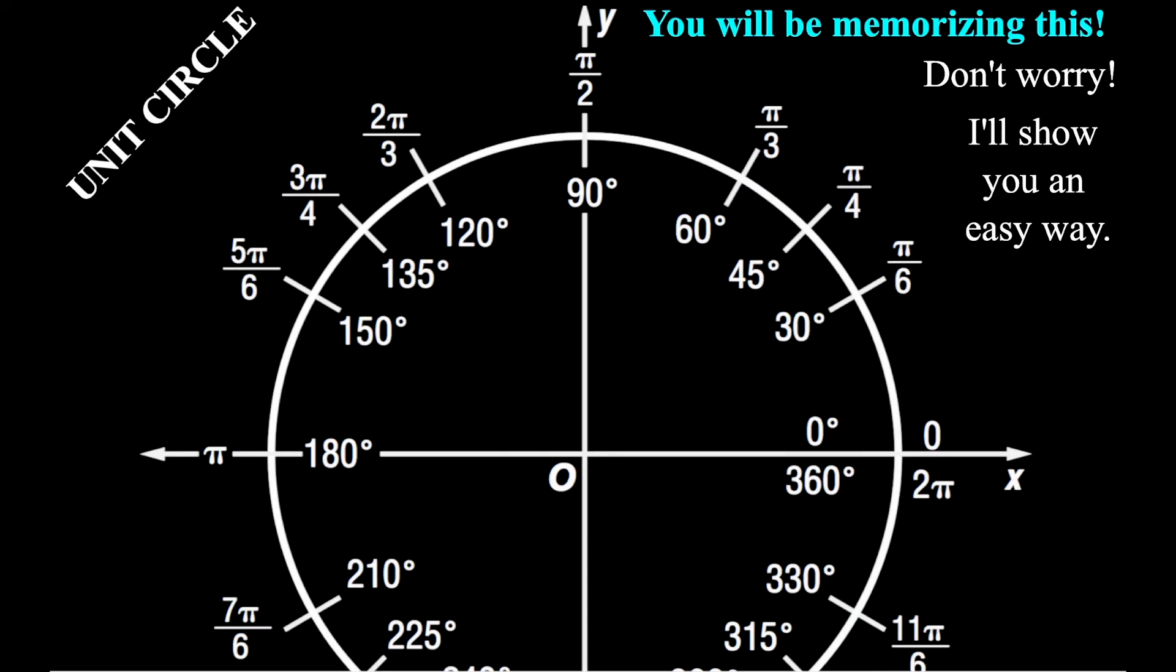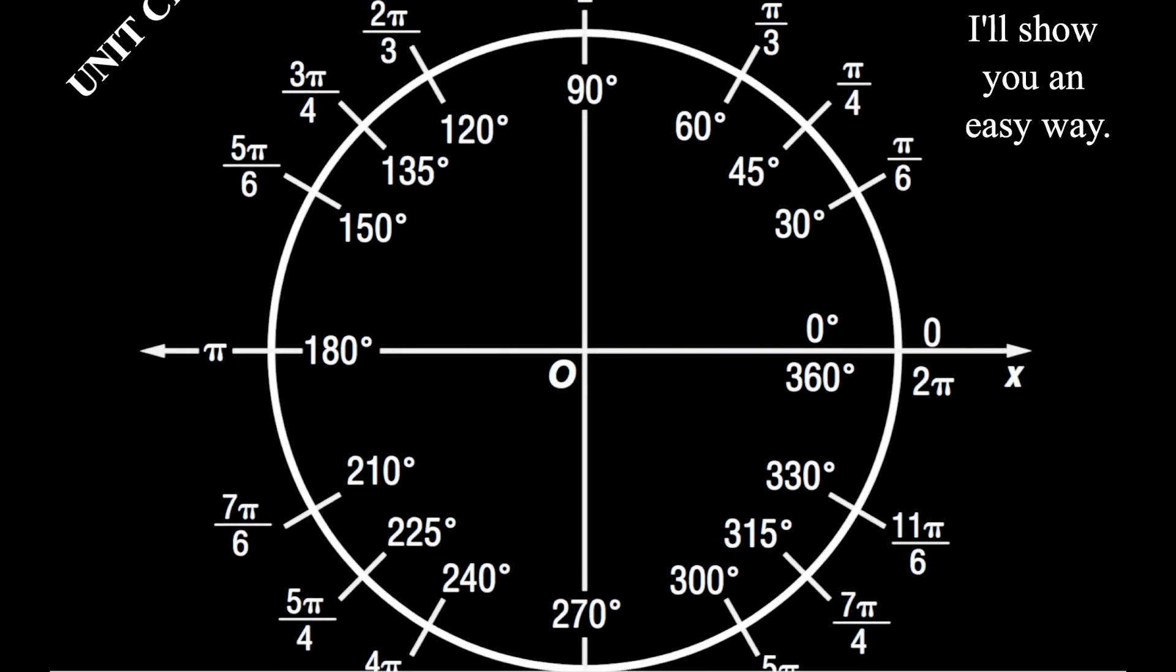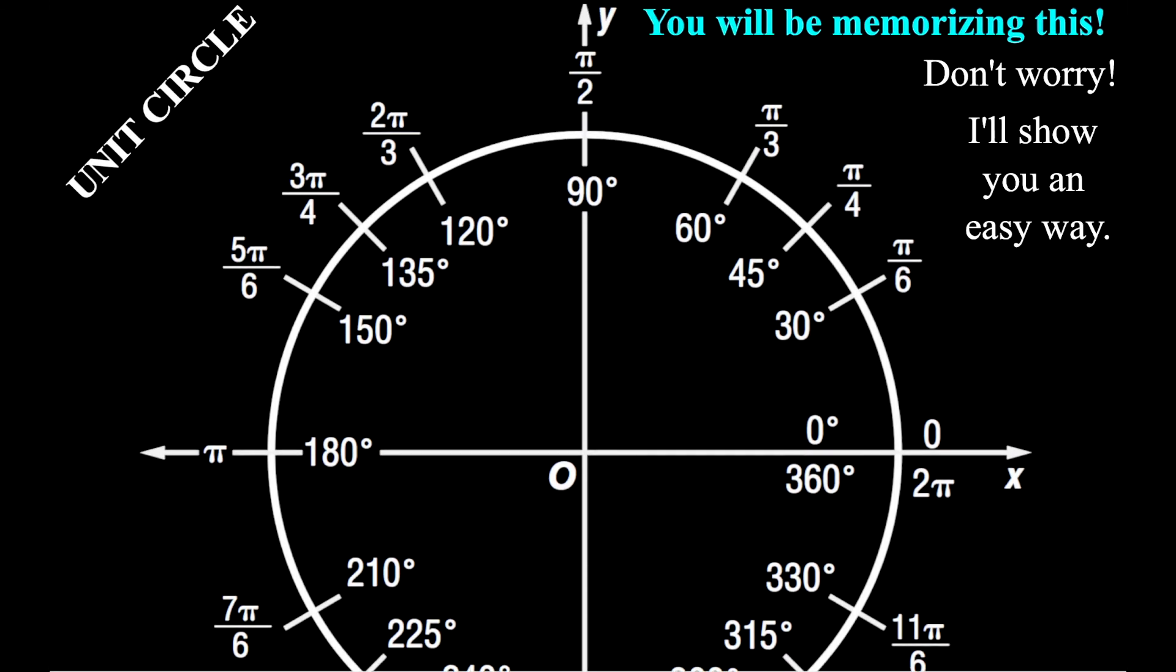Here is what's called the unit circle. This is something that you will be memorizing. Not only this information here. We're going to add some information as well. But for this right now, don't panic on me. I'm going to show you a very simple way. Really all you need to remember is the first quadrant here, which is going to be the 30, 45, and 60. What their radian measures are. We're going to talk a whole lot about this unit circle. And we'll talk more about that in the future. So just for now, I wanted to get this in your notes to get you a little bit familiar with it. And we're just going to leave it there for now.